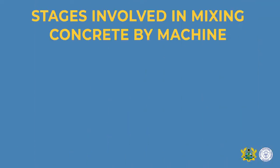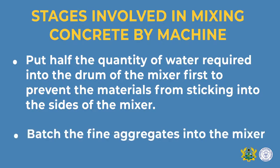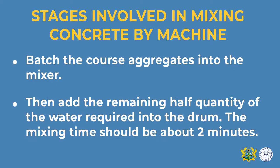In mixing concrete by machine, first put half the quantity of water required into the mixing drum — this is important to prevent the mixer from sticking to the sides of the drum. After the water is poured, batch the fine aggregate into the mixer, then batch the coarse aggregate. Add the remaining half quantity of water and mix for at least two minutes to achieve a uniform consistency.